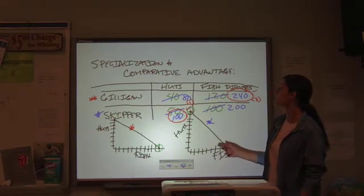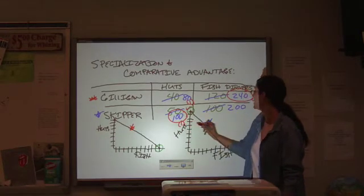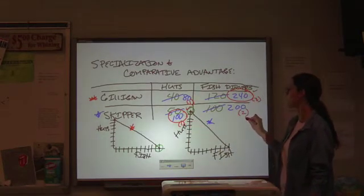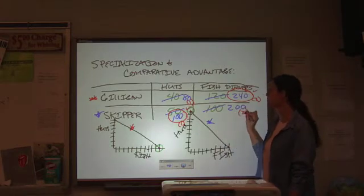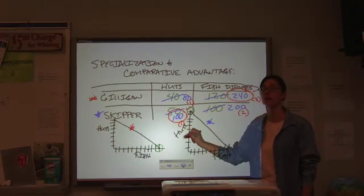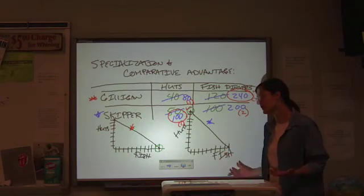But, if we look at the skipper, we have a one to two ratio. So, that one hut is worth two fish dinners or a fish dinner is worth half of a hut. So, what would be acceptable terms of trade to both of them?